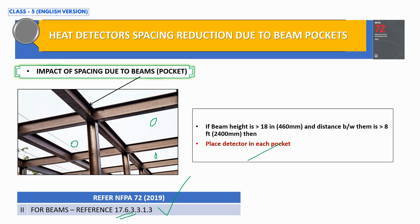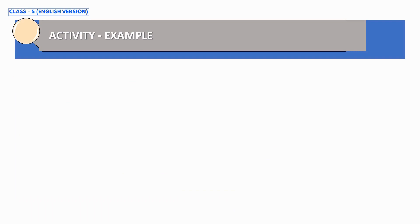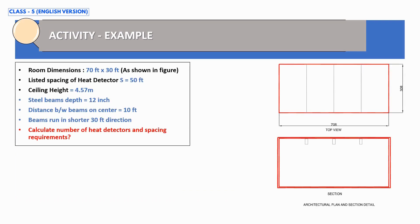In the next slide we look at an example. A particular building has dimensions of 70 feet by 30 feet, with steel beams of 12-inch depth and a distance of 10 feet between beams. The listed spacing between heat detectors is 50 feet. The ceiling height is more than 3 meters — specifically about 4.57 meters. We need to calculate the number of heat detectors and the spacing between them for this building.